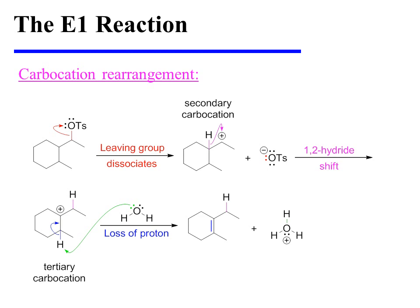Because E1 reactions involve carbocation intermediates, carbocation rearrangement is a possibility. In this specific example, the reaction begins with the dissociation of tosylate, which affords a secondary carbocation. But this secondary carbocation is adjacent to a tertiary center. Therefore, a 1,2-hydride shift occurs to relocate the carbocation to the more stable tertiary position. Next, a proton is lost from the beta position so as to yield the most highly substituted alkene product possible. In this case, that alkene product is tetrasubstituted.